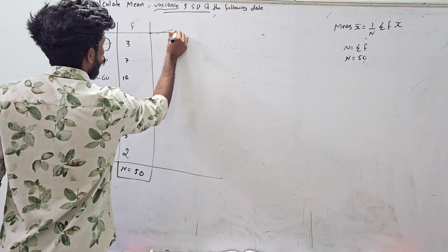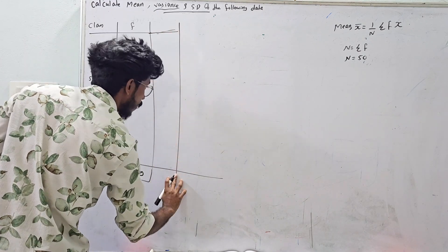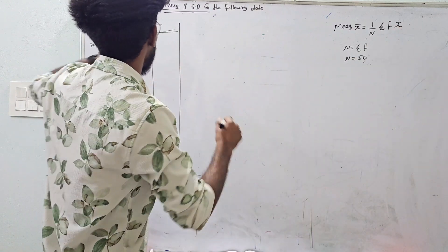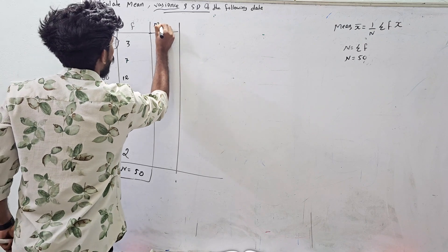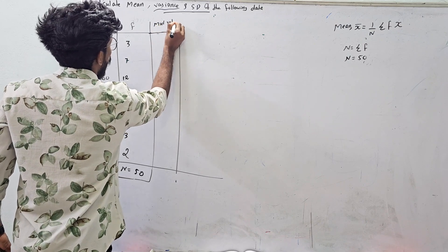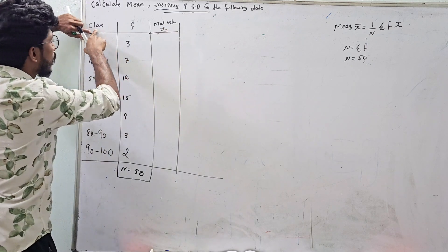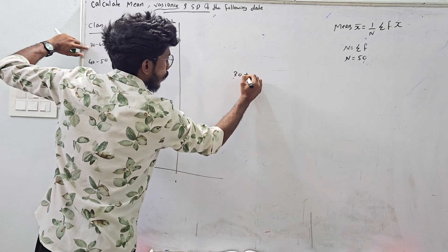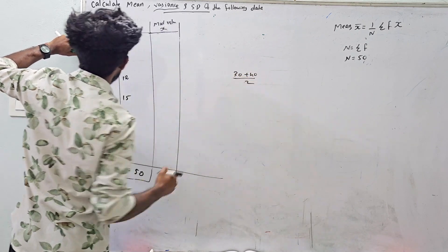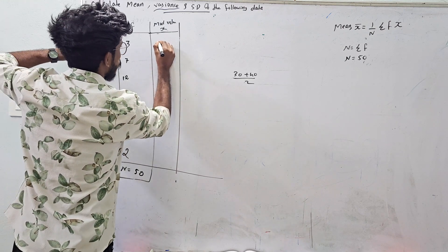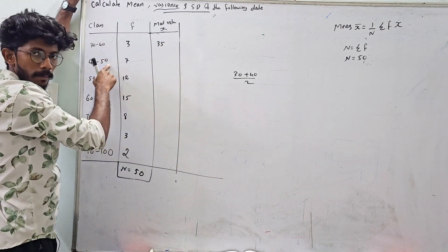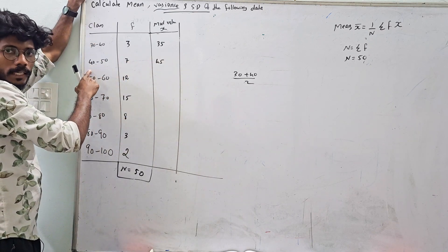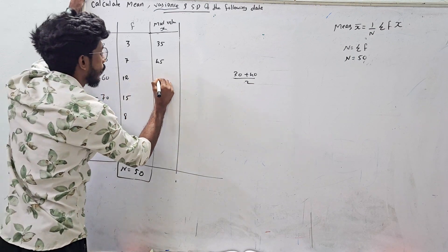Next, let's find f into x. What is fx? This x is the class mid value. The mid value is x. For class 30 to 40: 30 plus 40 by 2 equals 70 by 2, which is 35. The mid value for 40 to 50 is 45, and for 50 to 60 the mid value is 50. Then 40 plus 80 by 2 gives the mid value.